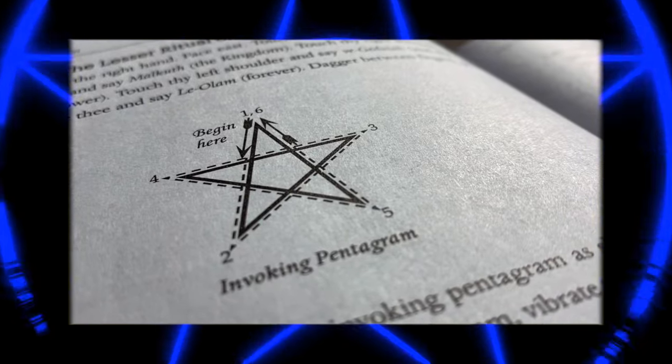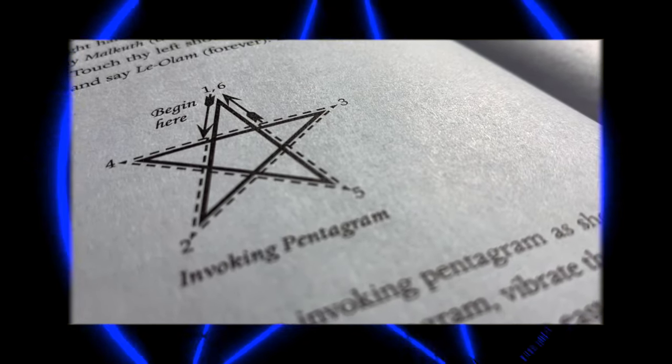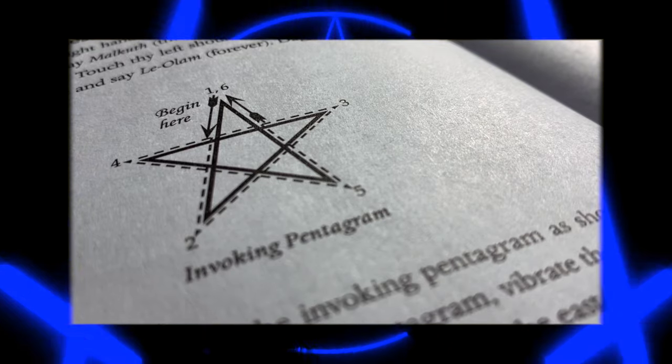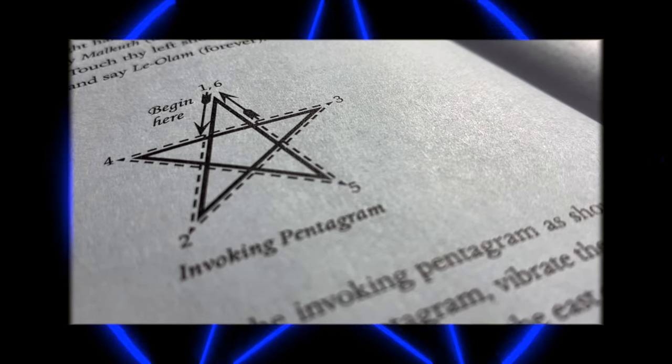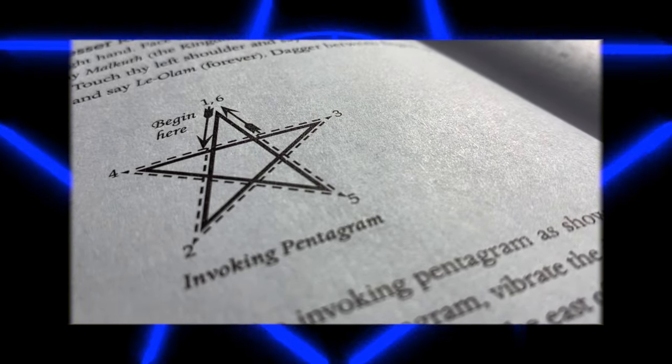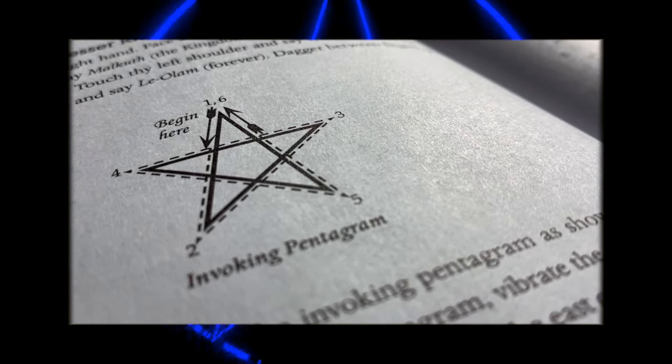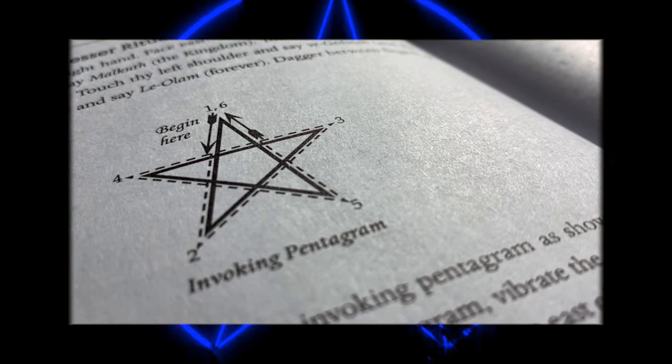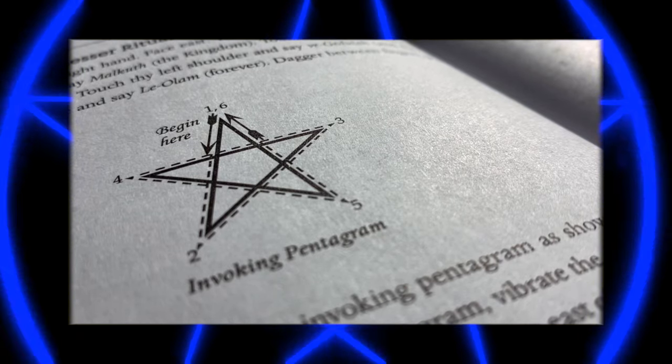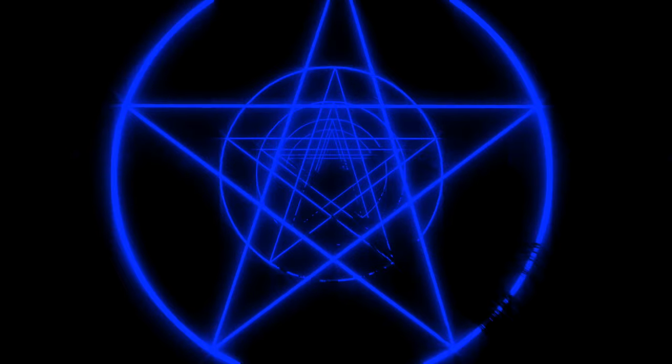Make in the air towards the east the invoking pentagram as shown, and bringing the point of the dagger to the center of the pentagram, vibrate the deity name, Yod-Heh-Vav-Heh. Holding the dagger out before you, go to the south. Make the pentagram and vibrate similarly the deity name, Adonai. Go to the west, make the pentagram and vibrate, Eheieh. Go to the north, make the pentagram and vibrate, Agla. Return to the east and complete your circle by bringing the dagger point to the center of the first pentagram.